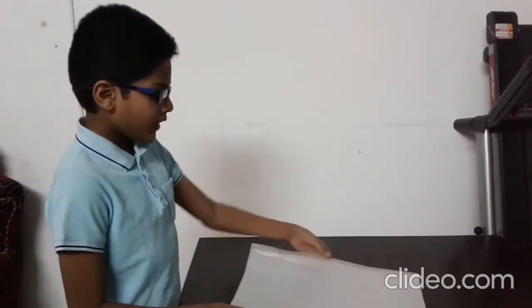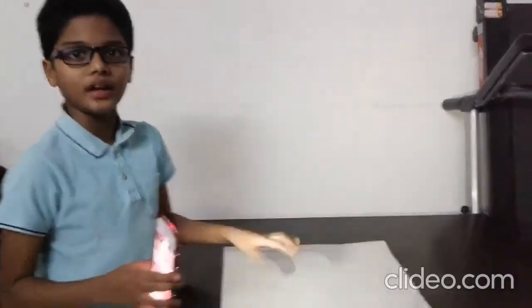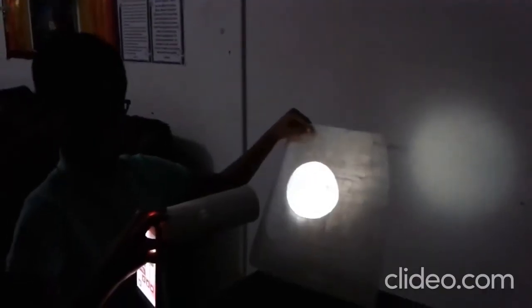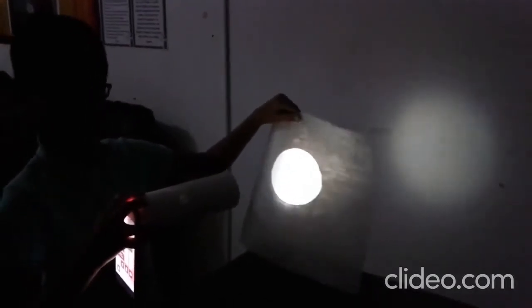For example, this is a trace paper and this is a light source. If I use the light, here it allows the light to go in a scattered manner.